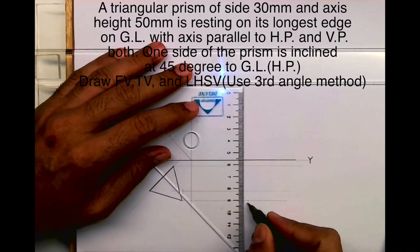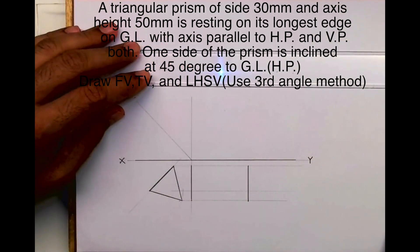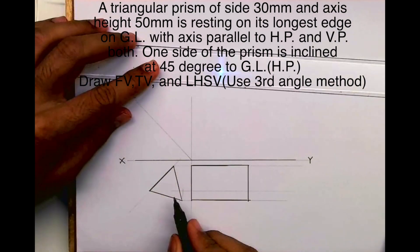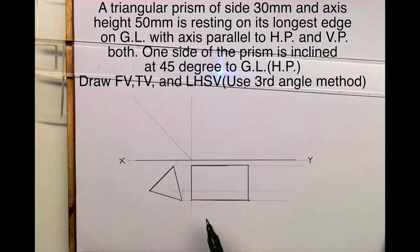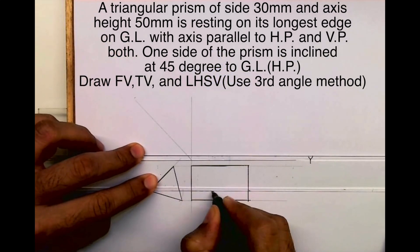Axis height is 50, so I'll take 50 and I will draw a line. So this is the front view. Now I need to see which one is dark and dotted. This one will be dotted because the observer is not able to see that.